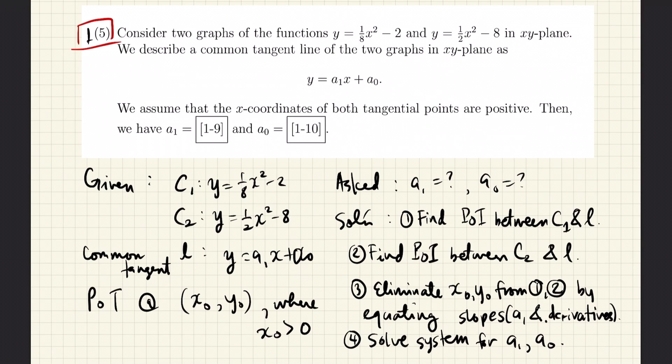We call this common tangent line L. L has the equation y = a1*x + a0, where a1 and a0 are constants. We are also told that the points of tangency between C1 and L, and C2 and L, all occur on either the first or fourth quadrant. That means that if the point of tangency is given by x0, y0, then x0 must be positive. We are then asked to find a1 and a0, which are the parameters of the tangent line. a1 is the slope and a0 is the y-intercept.